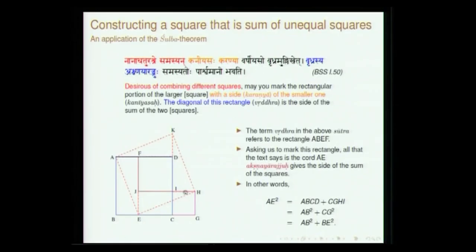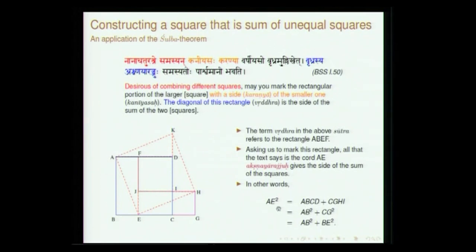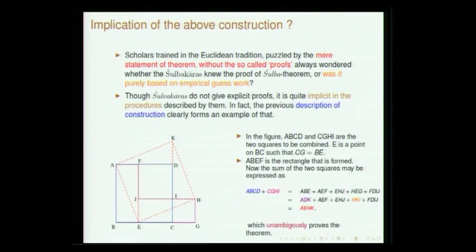You have one square and another smaller square — you just do a certain operation and get the value of the larger square without any numerical calculation. The sutra says: think of the smaller square CG — karani here refers to the side CG. You mark CG in the larger square. The term vridhar can be understood as a sort of rectangle, BEFA. Then akshnaya rajuhu, meaning the diagonal AE, is the side of the square you desire. AE squared is basically AB squared plus CG squared.